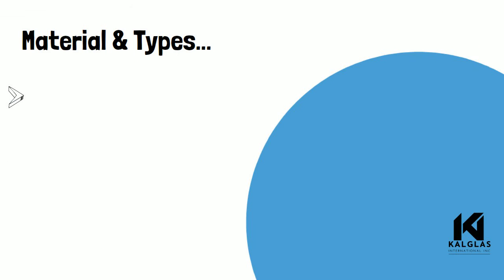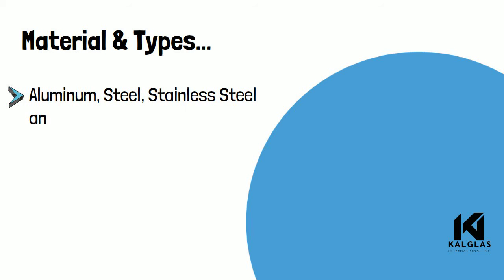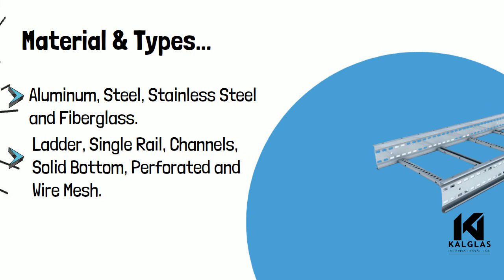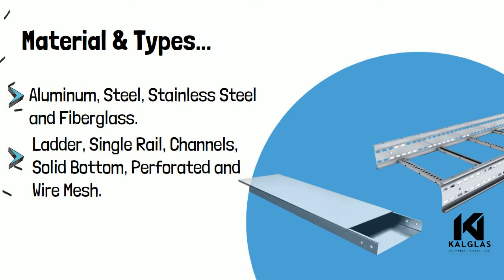The choice of material for any installation depends on the installation environment, electrical considerations, and cost. Most cable tray systems are fabricated from aluminum, steel, stainless steel, or fiberglass.